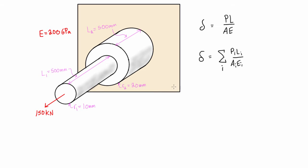To get all the information we need, the only thing we're missing are the areas for each section. For section one, the area is equal to πr², which is π times 10 millimeters squared, and that gives us 314.16 millimeters squared.